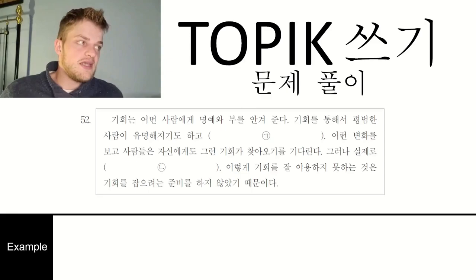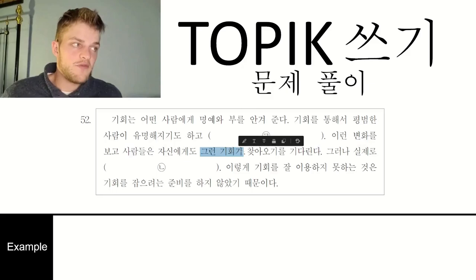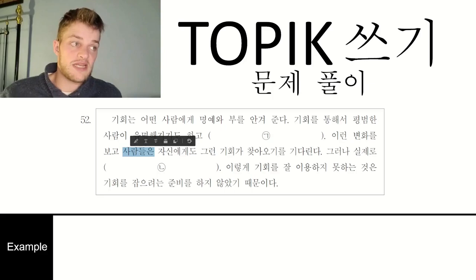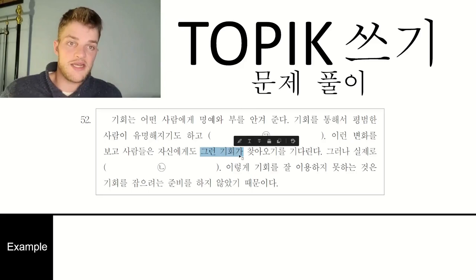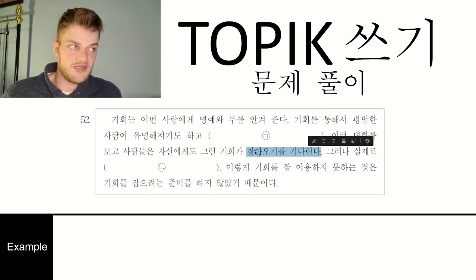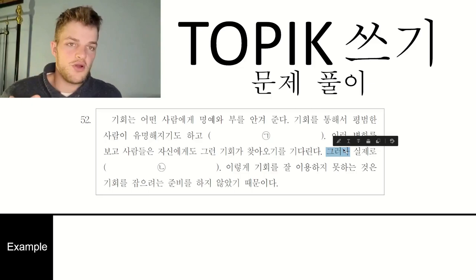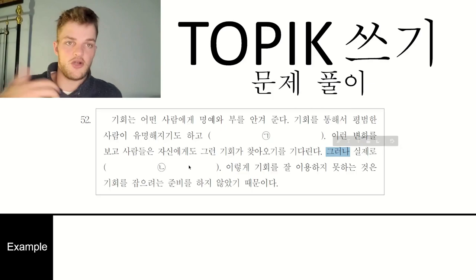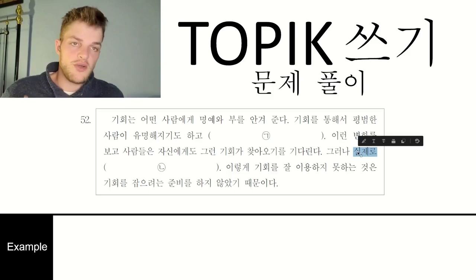Continuing: 이런 변화를 보고 — seeing this change — 사람들은 자신에게도 그런 기회가 찾아오기를 기다린다 — people wait for that kind of opportunity to come to them as well. Then 그러나 — however — 실제로 — in reality — [blank]. This 그러나 hint word is very important: it tells us whatever we write needs to be a contrast to the previous information about opportunities giving wealth and honor.